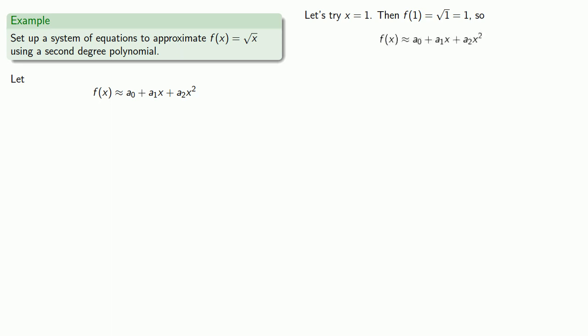And so, if our function is approximated by the polynomial, then our function value at 1 should be equal to the polynomial at 1. So I'll substitute and clean things up a little bit, and this gives me one equation with three unknowns. That gives us one equation with three unknowns. So if we can find two other equations, we can solve the system.